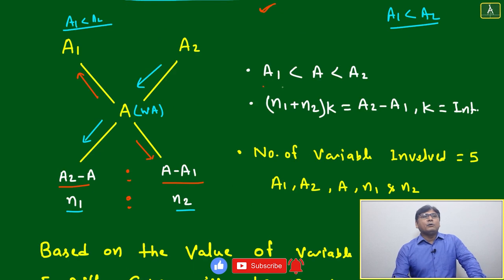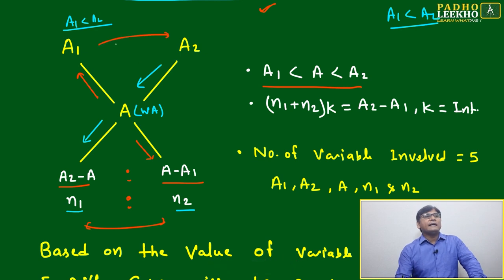And n1 plus n2 into k means if you are adding these two, that will always be related to if you are taking the difference between these two. Because the difference between A1 and A2 only will split and that will give the scope for n1 and n2.